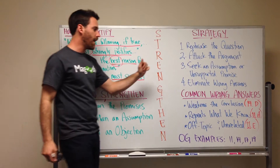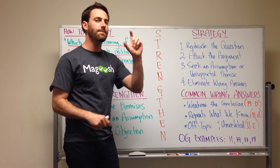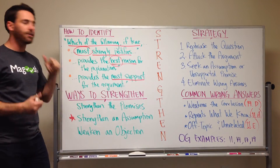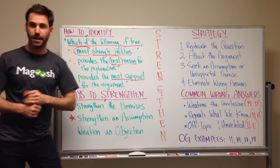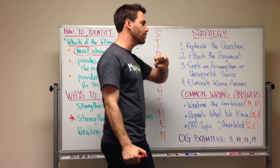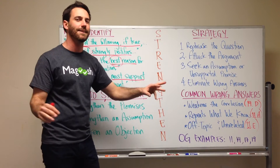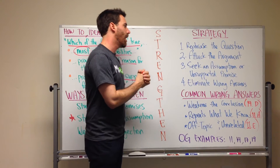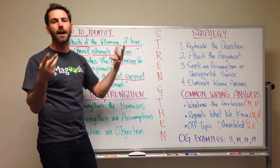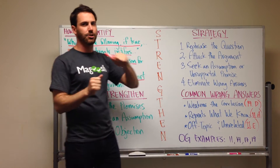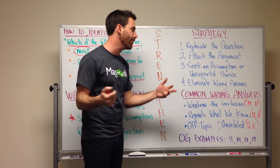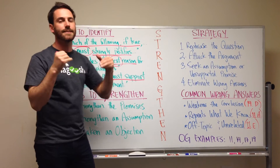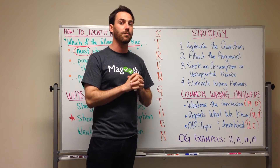Let's move on to strategy. There are four basic steps. Since these passages are small, I recommend starting with the question — rephrase it, look for clues, and figure out what question type it is. Once you figure out it's a strengthening question, you're going to attack the argument — that doesn't mean criticize it, it just means break it apart. Find the conclusion, find the premises, and think about some assumptions. It always helps to think about it in your own terms, since the argument often uses unfamiliar words or made-up company names. Process it, put it into your own words, and you'll understand the argument much better.